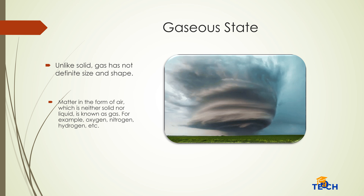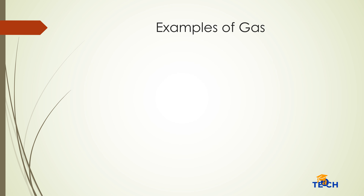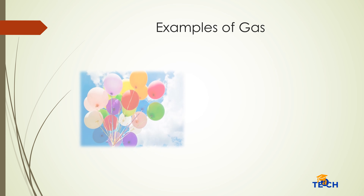Unlike solids, gas has no definite size and shape. Matter in the form of air, which is neither solid nor liquid, is known as gas. For example, oxygen, nitrogen, and hydrogen are gases. Some examples of gas include air balloons and smoke.